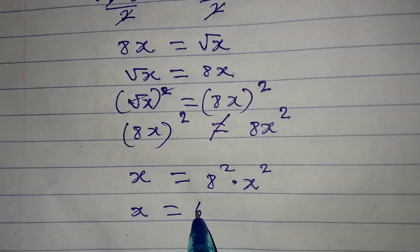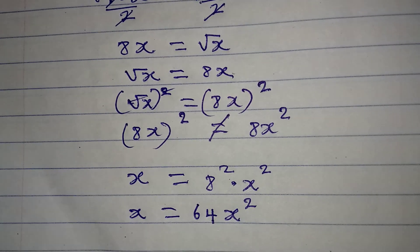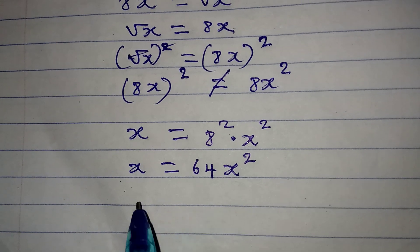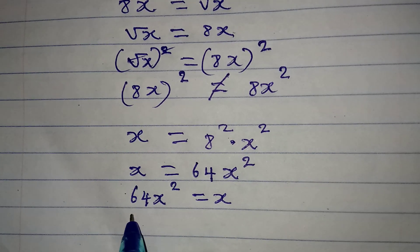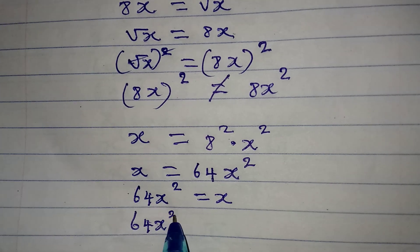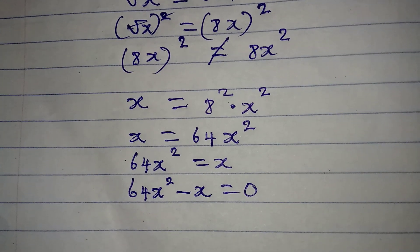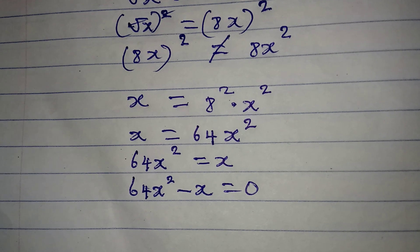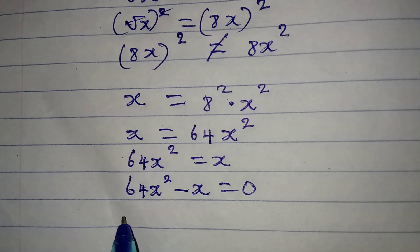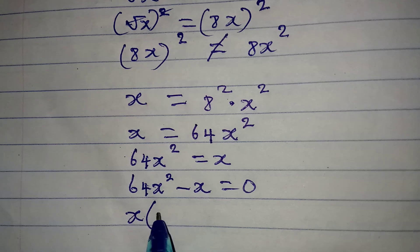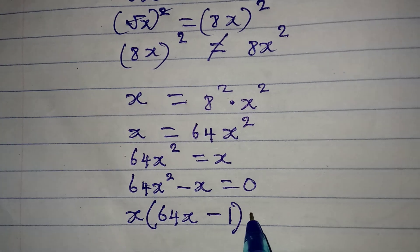8 squared is 64, not 16, so we have x equal to 64x². Rearranging, 64x² minus x equals 0. This is a quadratic equation with no constant term. We solve by factoring out x as the common factor: x times (64x minus 1) equals 0.